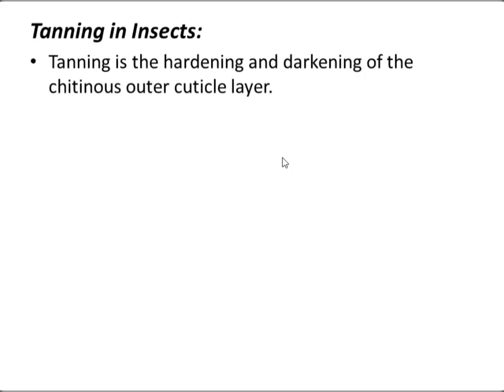There is another process called tanning or sclerotization. This is the hardening and darkening of the cuticle's outer layer after molting or ecdysis.